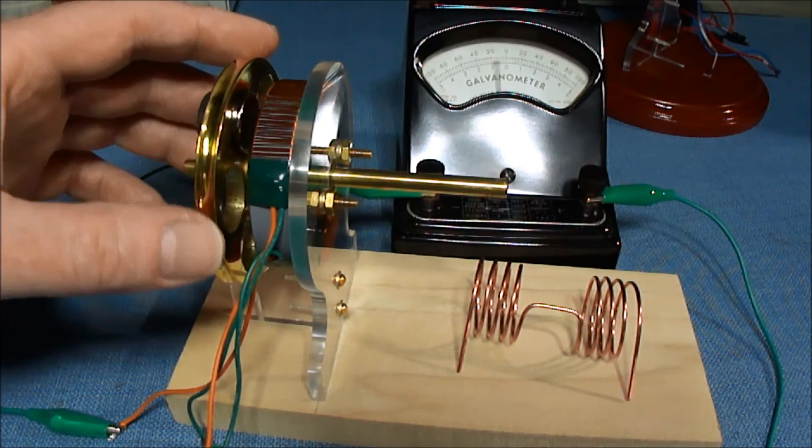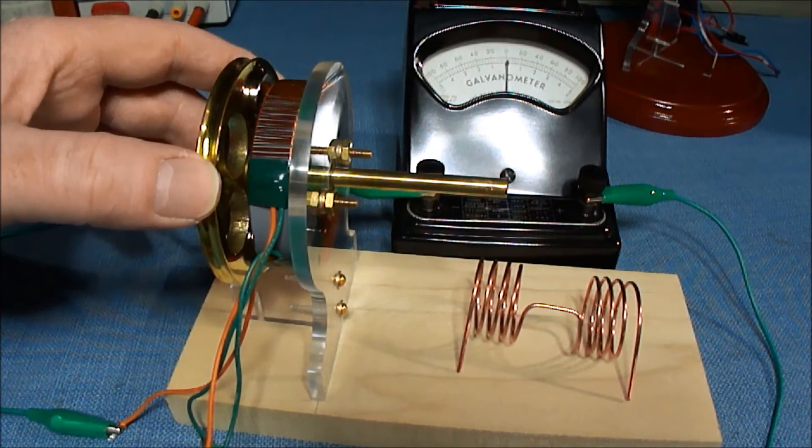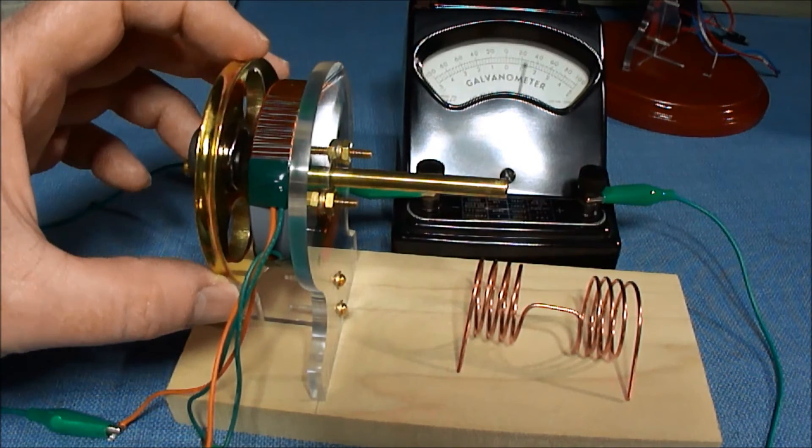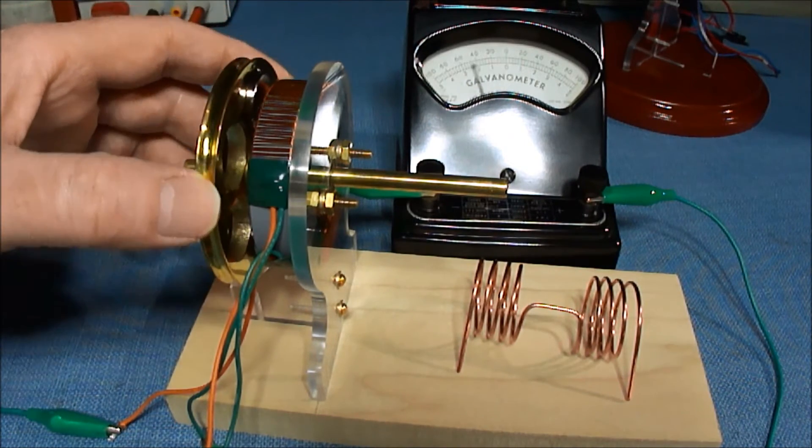Now if I avoid that section and just turn the rotor and stop, the needle swings in one direction and goes right to zero.